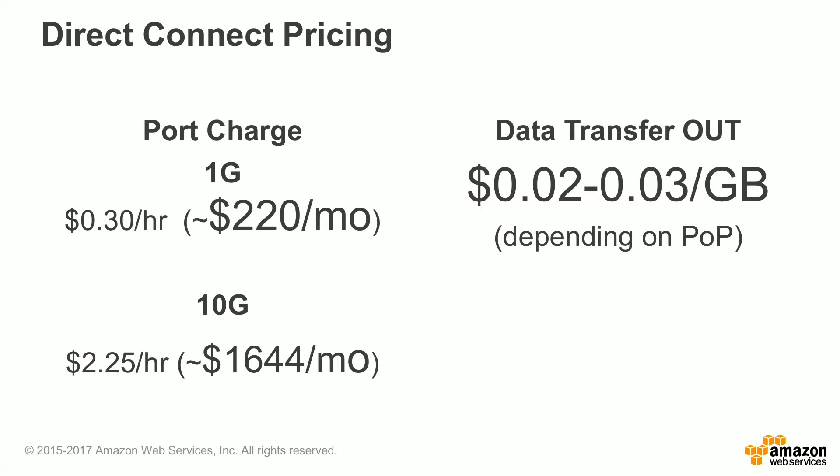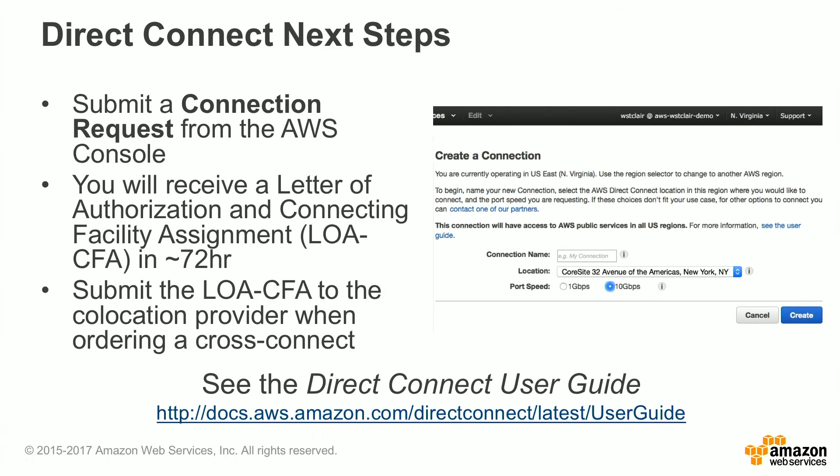Direct Connect pricing includes a data transfer out fee of $0.02 to $0.03 per gigabyte, depending on the point of presence you're located in. There are also port charges: roughly $220 per month for a 1 gig connection or $1,600 per month for a 10 gig connection. For next steps, go into the console and create a connection request. You'll receive a letter of authorization and a connecting facility assignment within three days, then submit that to your co-location provider when ordering the cross-connect.